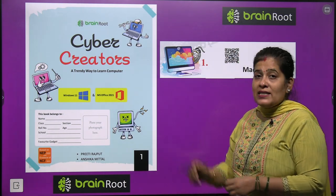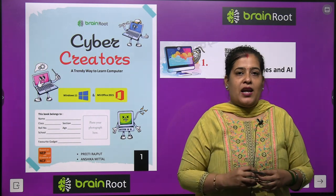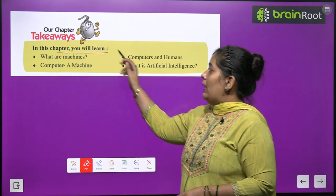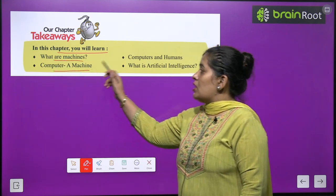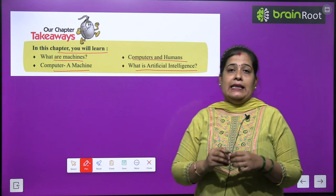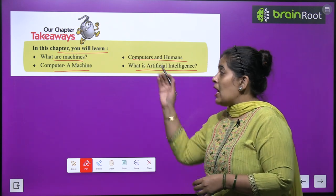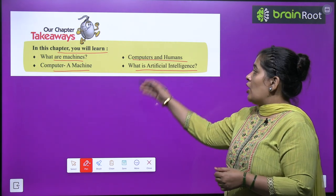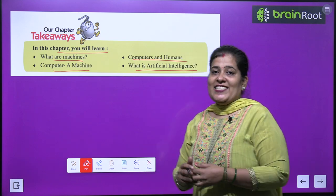Aaj hum apna chapter number 1 start karenge. Chapter ka naam hai Machines and AI. In this chapter you will learn about: What are machines? Computer as a machine. Computers and humans. What is artificial intelligence? Is part mein aap in sab cheezon ke baare mein padheenge. Toh chaliye start karte hain apna chapter.